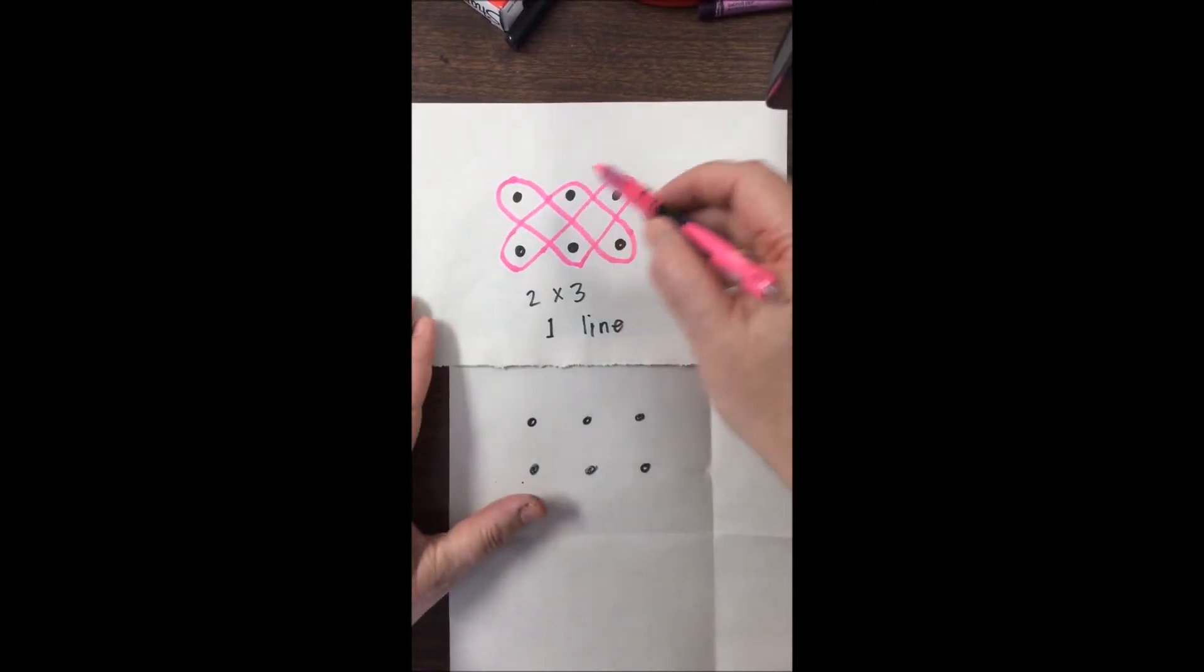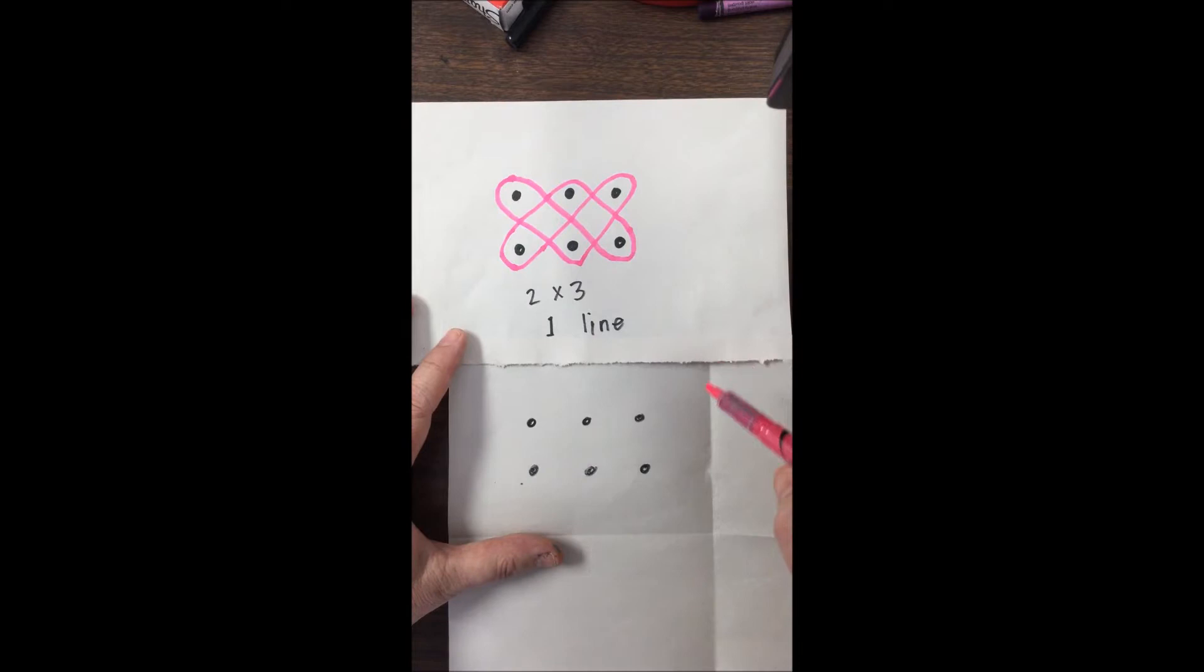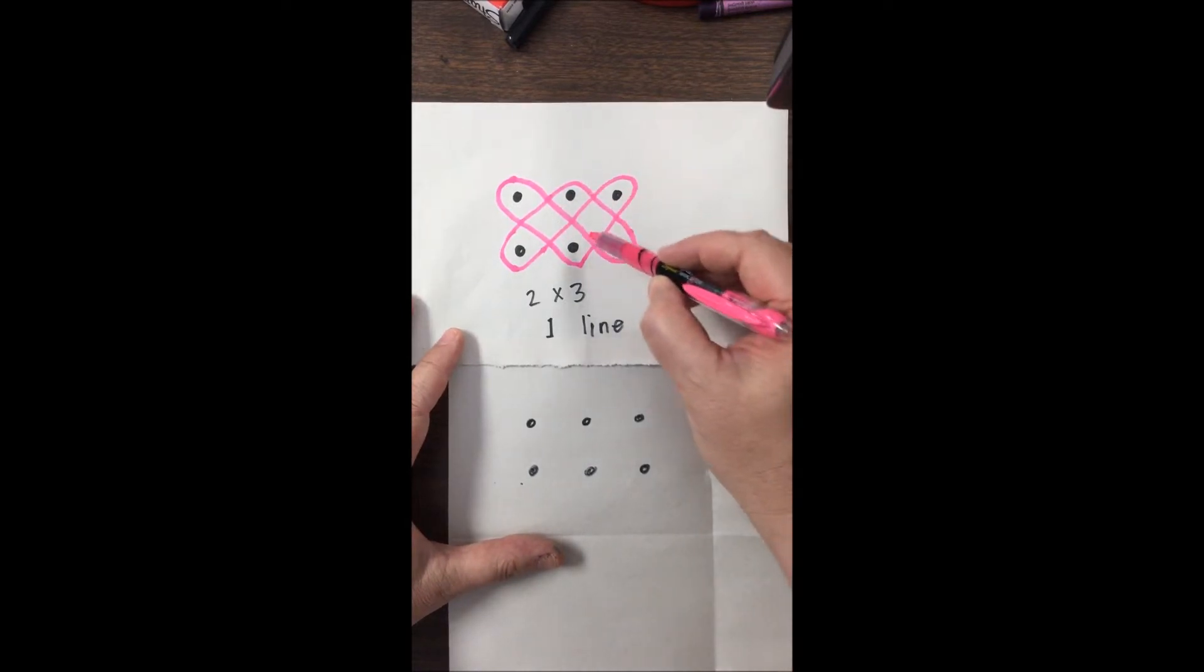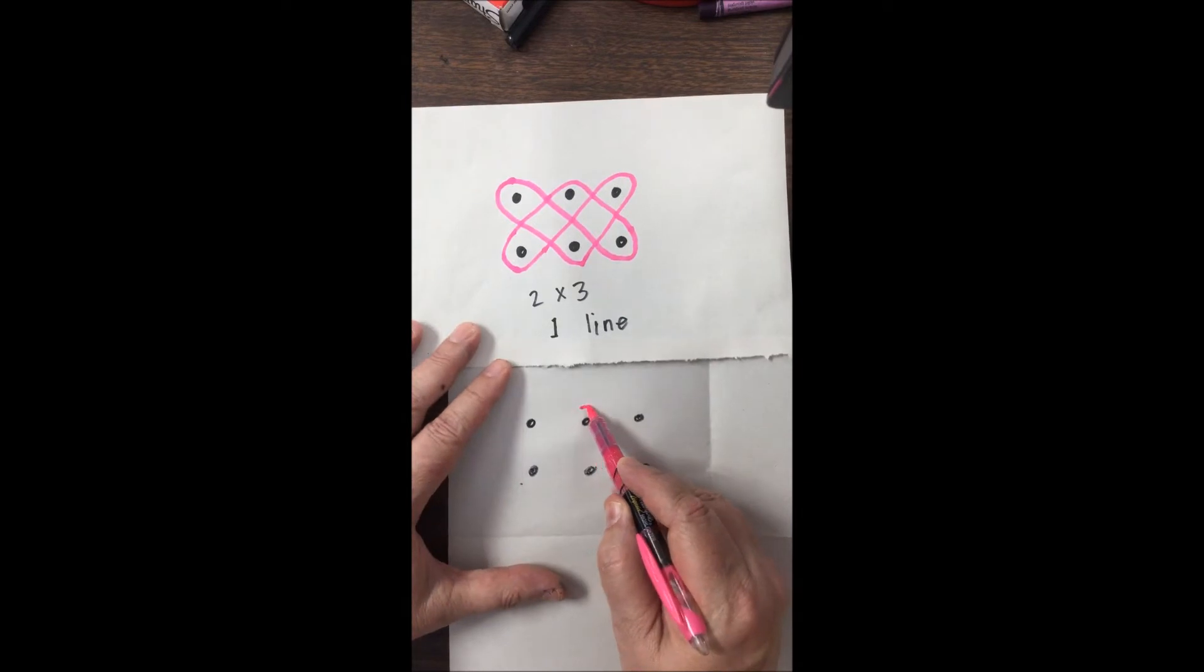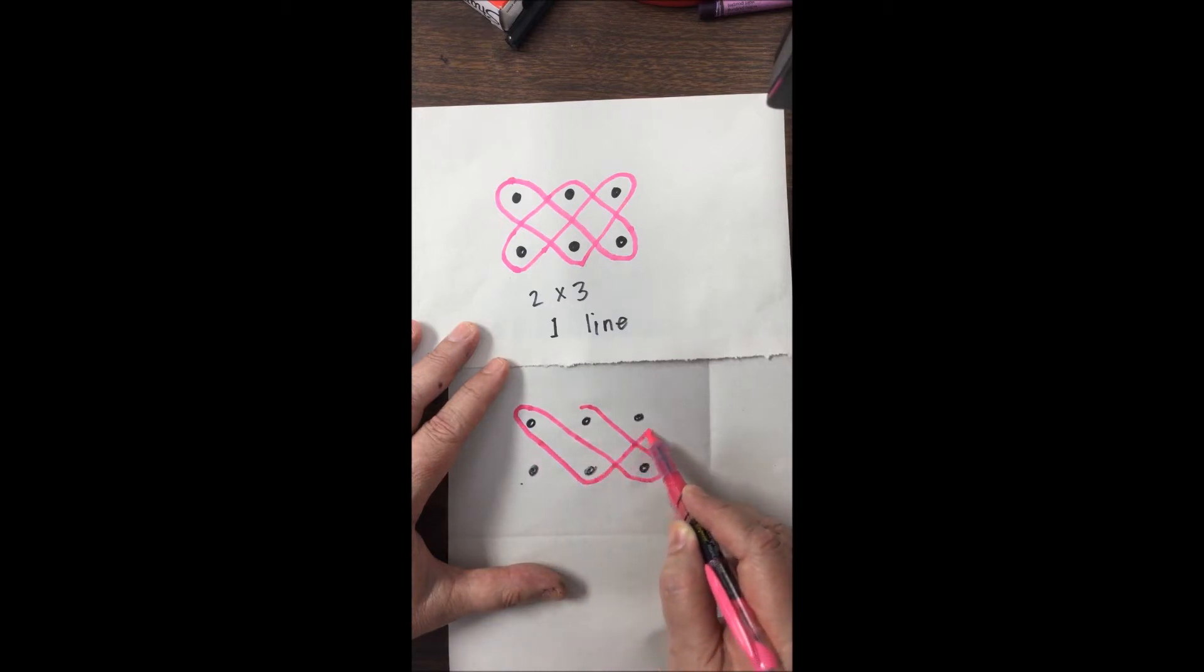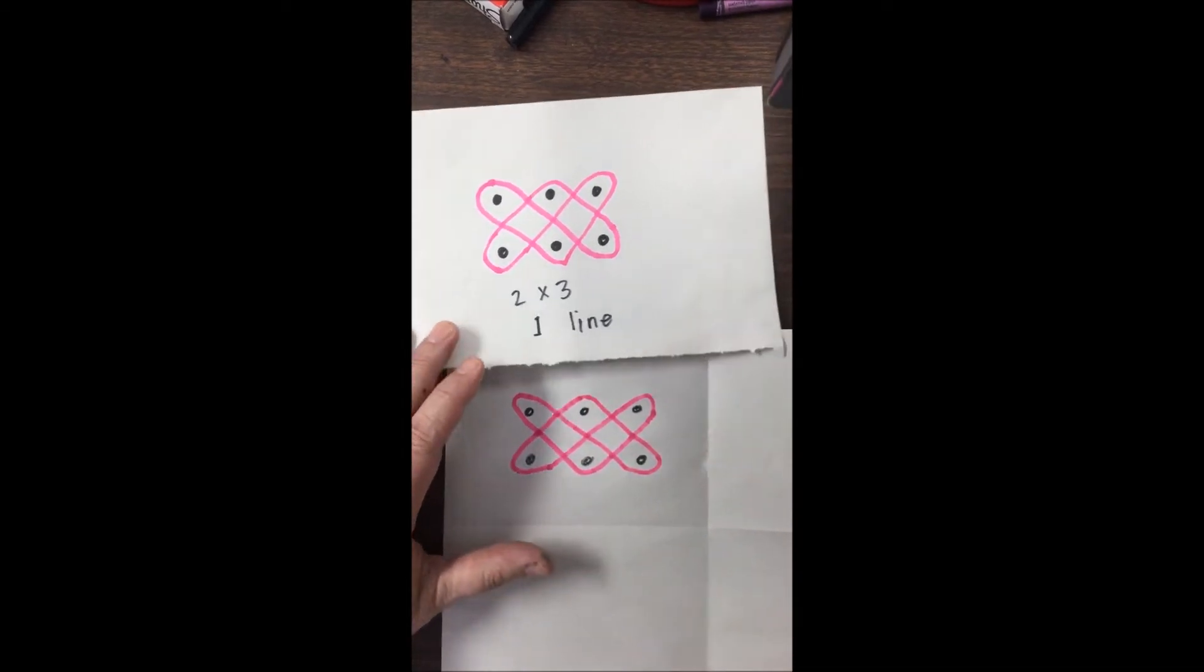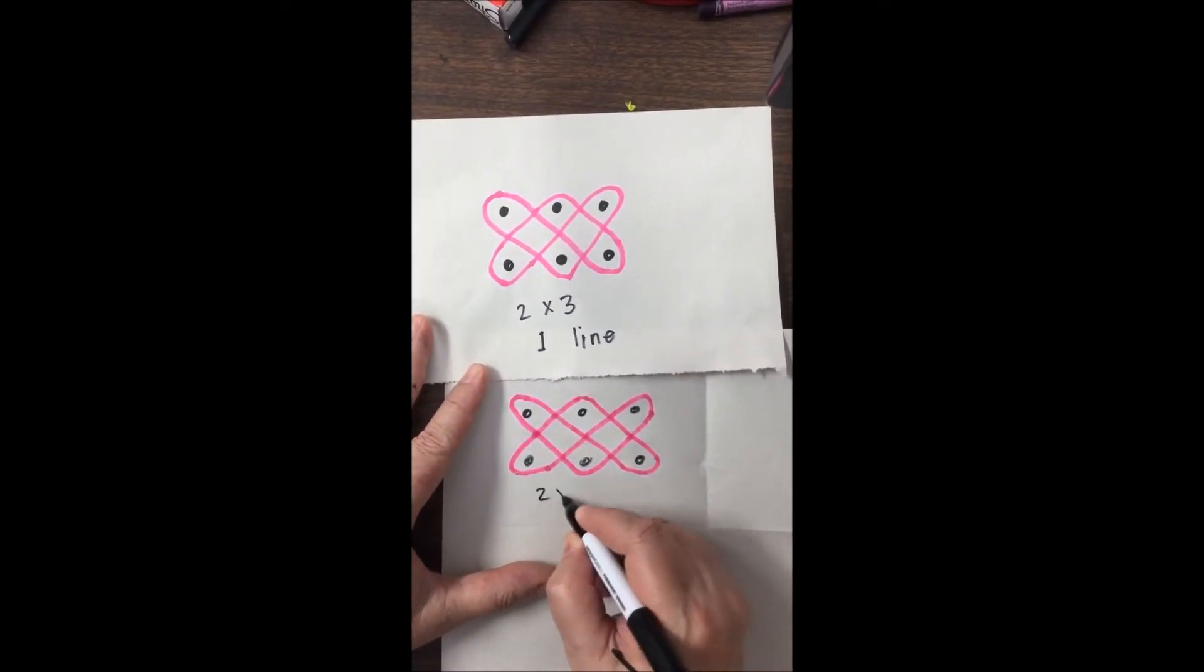Now we're going to see how this is all done with one line and if you need to pause or rewind that's what the video is here to help you with. You can start these drawings anywhere. I'm going to start mine in the middle here. So this goes down to the lower left corner and then back up to the upper left, down here, upper right, and then around like that. So that's done with all one line. That's a two by three one line.